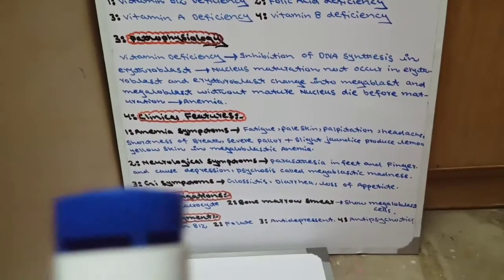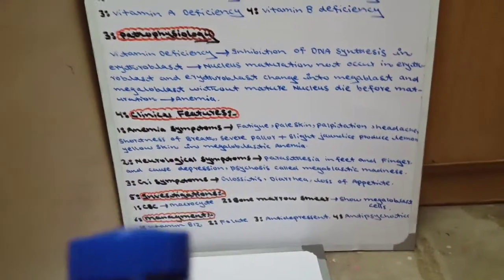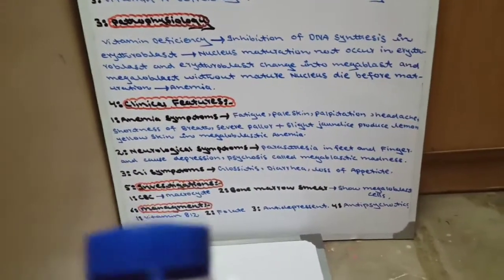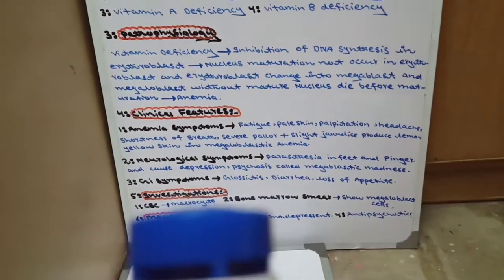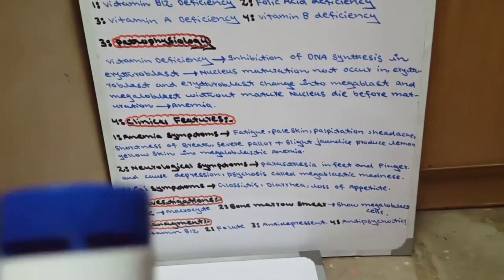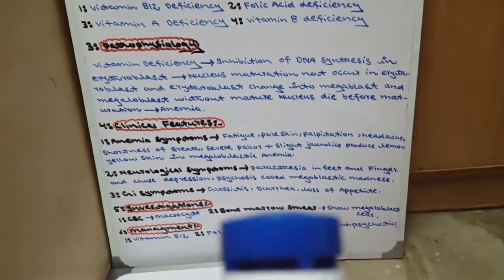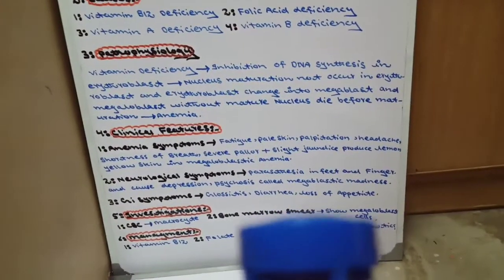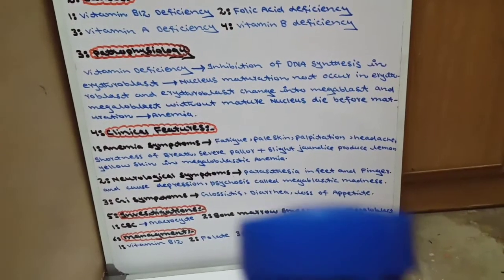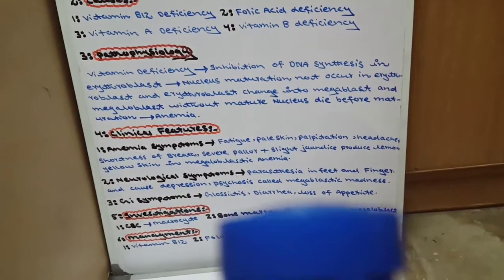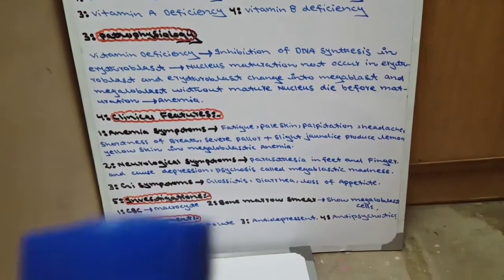Teesre symptoms hain GI symptoms — gastrointestinal. Megaloblastic anemia mein glossitis hoga yaani tongue mein inflammation aayegi. Doosra diarrhea hoga. Aur teesra loss of appetite — patient ko bhook nahi lagegi. Yeh hain clinical features.